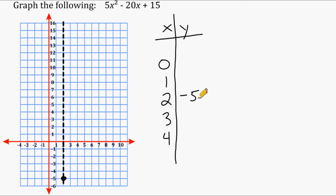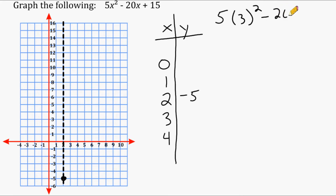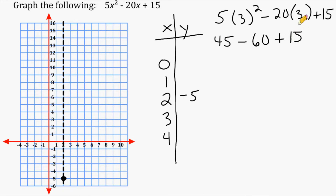Plugging x=3 into the equation: 5 times 3 squared minus 20 times 3 plus 15. Squaring 3 gives 9, and 5 times 9 is 45. Then 20 times 3 is 60, so we subtract 60, then add 15. 45 minus 60 is negative 15, and negative 15 plus 15 equals 0. So when x equals 3, y equals 0.